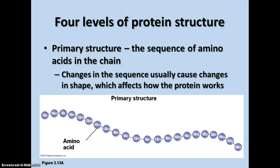When we talk about protein structure, there are four levels. The primary structure is the sequence of amino acids in the chain. There are 20 different amino acids, and they can be joined together in any number of combinations. If you change the sequence of the amino acids in the chain, this will usually cause changes in the shape of the protein, which affects how the protein works. So the primary structure — the order of amino acids — is a very important part of forming the overall protein.